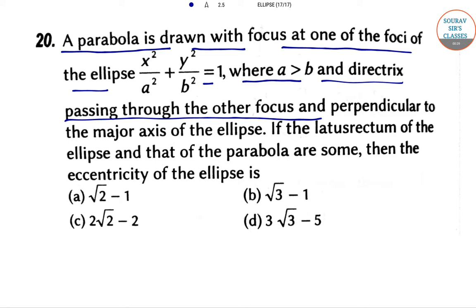If the latus rectum of the ellipse and that of the parabola are the same, then the eccentricity of the ellipse is what? That is our question. This means they are equal - they are the same.